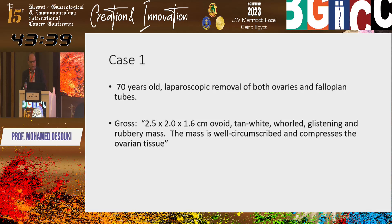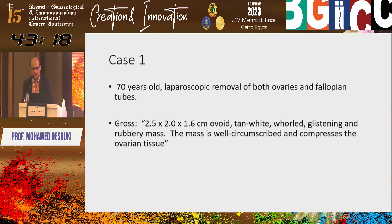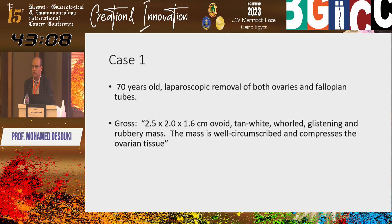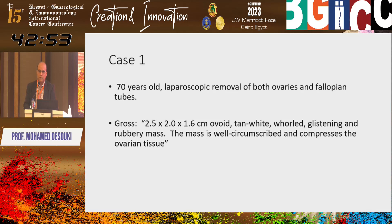I will present the topics in order according to the book, but I will present them as cases because this may be more attractive. This is a 70-year-old with laparoscopic removal of both ovaries and fallopian tubes. Grossly, a 2.5 centimeter ovoid, tan-white, whorled, glistening, and rubbery mass — well-circumscribed and compressing the ovarian tissue. The most striking feature is the age, because there is a very bimodal distribution of ovarian tumors.